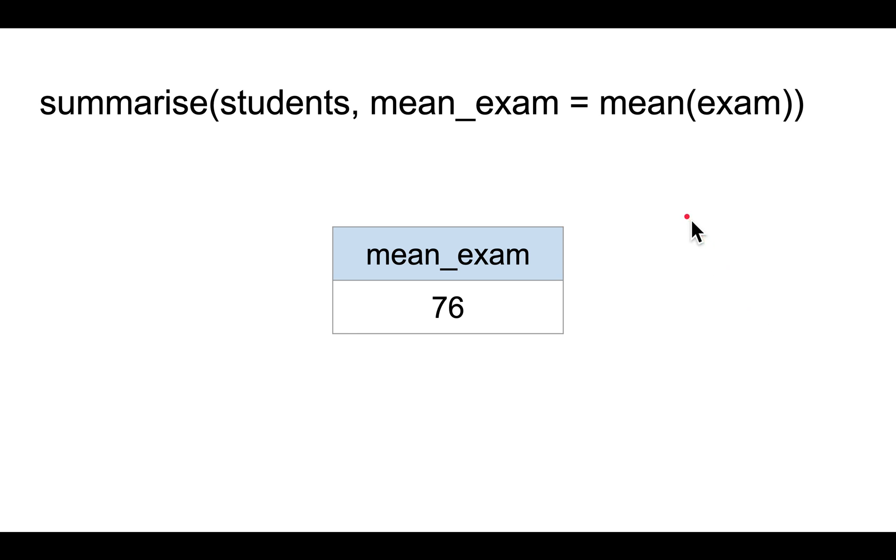The function summarize is a bit different. It computes summary statistics for the entire data frame. For example, if you want to compute the mean exam score, it creates a new data frame with the column mean exam score equal to the mean of the exam scores.